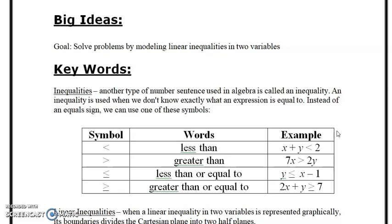An inequality is another type of number sentence used in algebra. We have four inequality symbols: less than (e.g., x + y < 2), greater than (e.g., 2x > 2y), less than or equal to (e.g., y ≤ x − 1), and greater than or equal to (e.g., 2x + y ≥ 7). You've probably seen these before, at least from Math 10.